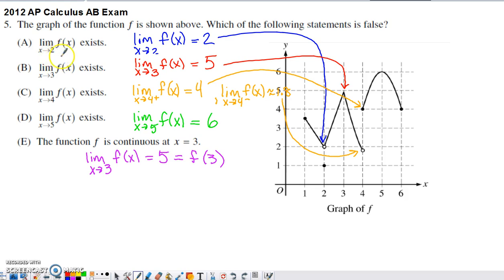Choice A is what I would predict is the most frequently given wrong answer. It says the limit as x approaches 2 exists. From the left side of 2, we're coming toward this open circle with y-coordinate 2. From the right side of 2, we're also coming toward this open circle with y-coordinate 2. People often confuse a limit existing with the function being continuous there.